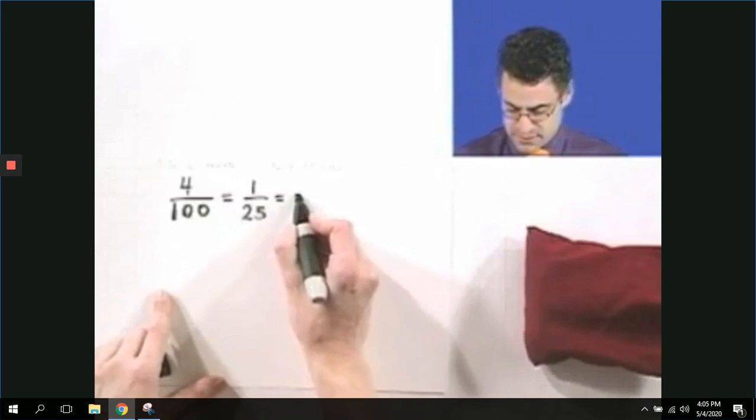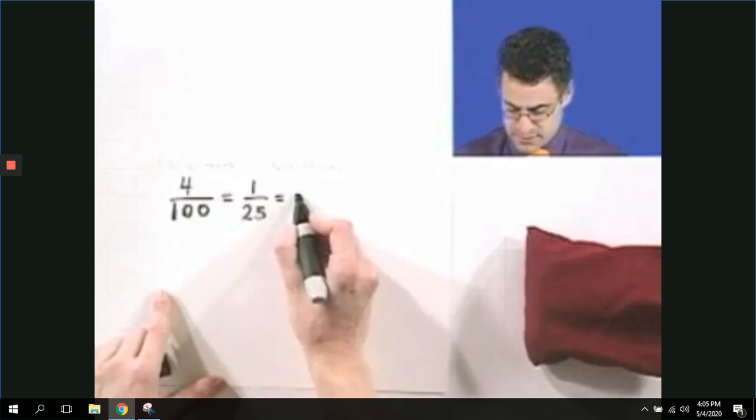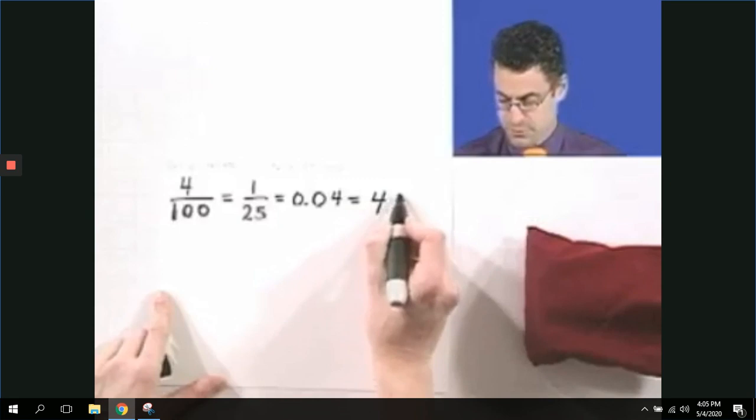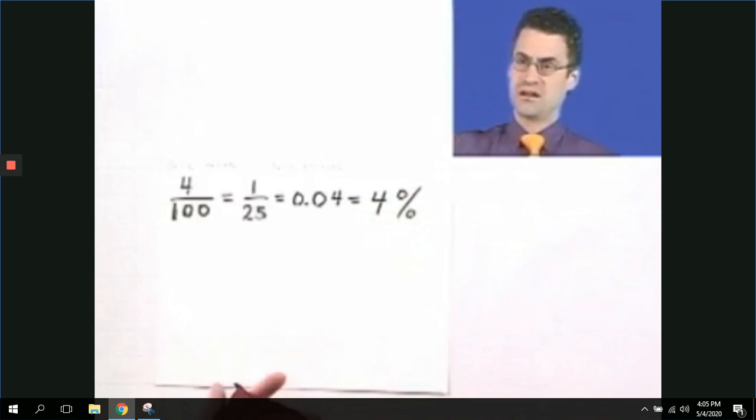If you want a decimal version, that's going to be 0.04. And if you want a percent version, you see it's 4%. 4% is sort of small, so it's not very likely that I'm going to reach in here. I've got 100 different chances, and only four of them are going to give me success.